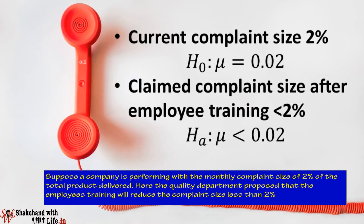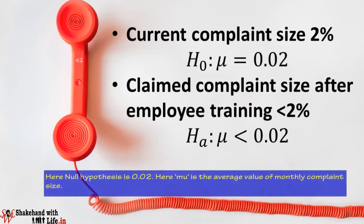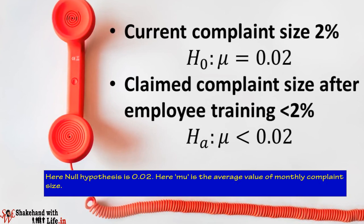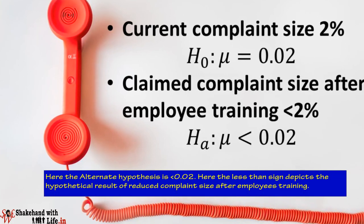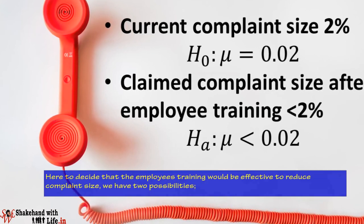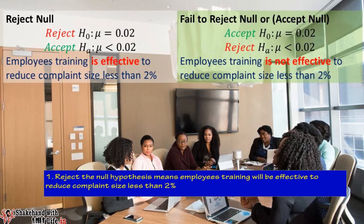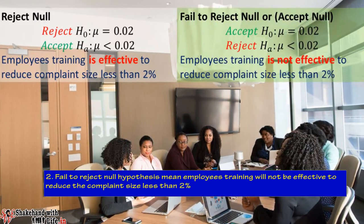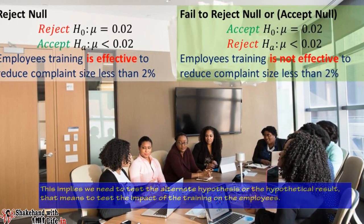Suppose a company has a monthly complaint size of 2% of total products delivered, and the quality department proposes that employee training will reduce complaints to less than 2%. The null hypothesis is H₀: μ = 0.02, where μ is the average monthly complaint size. The alternate hypothesis is Hₐ: μ < 0.02, where the less-than sign depicts the hypothetical result of reduced complaints after training. There are two possibilities: reject the null hypothesis, meaning training will be effective, or fail to reject the null hypothesis, meaning training will not reduce complaints below 2%.